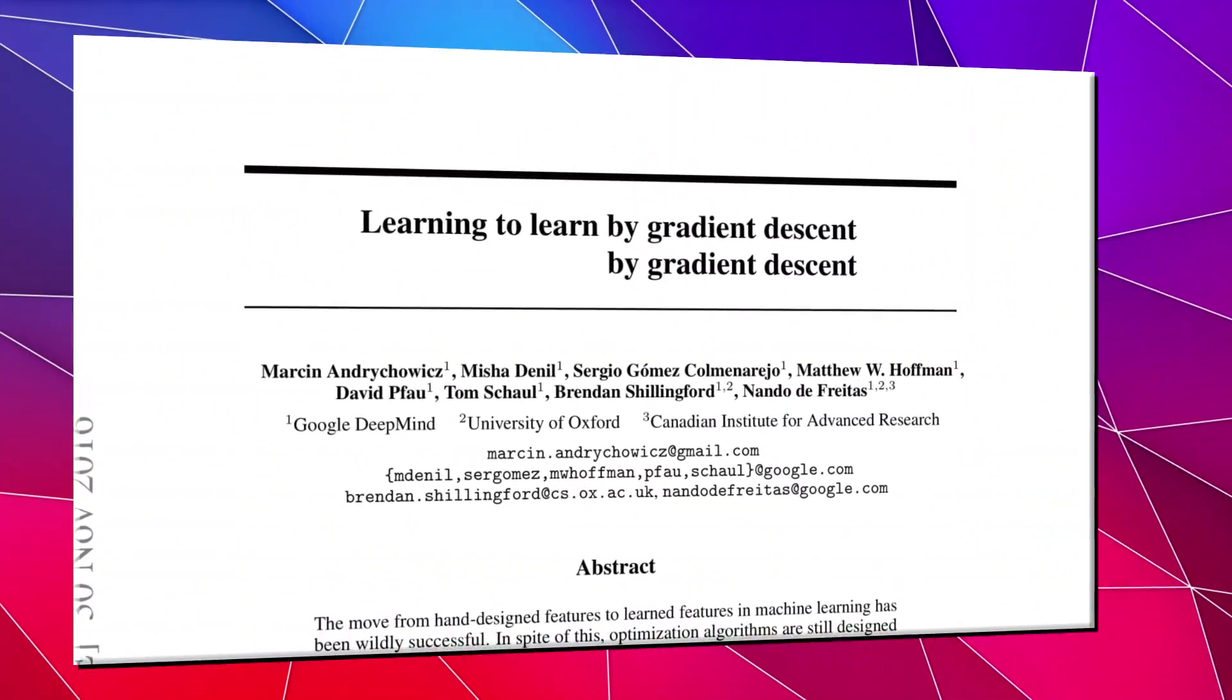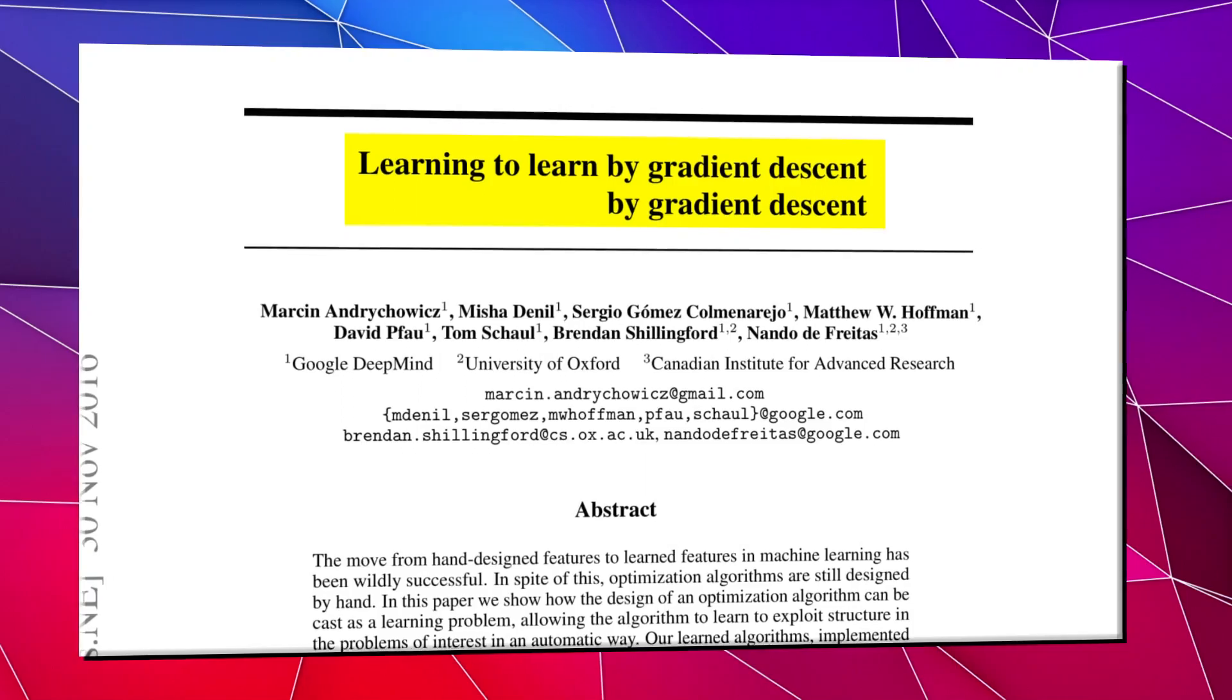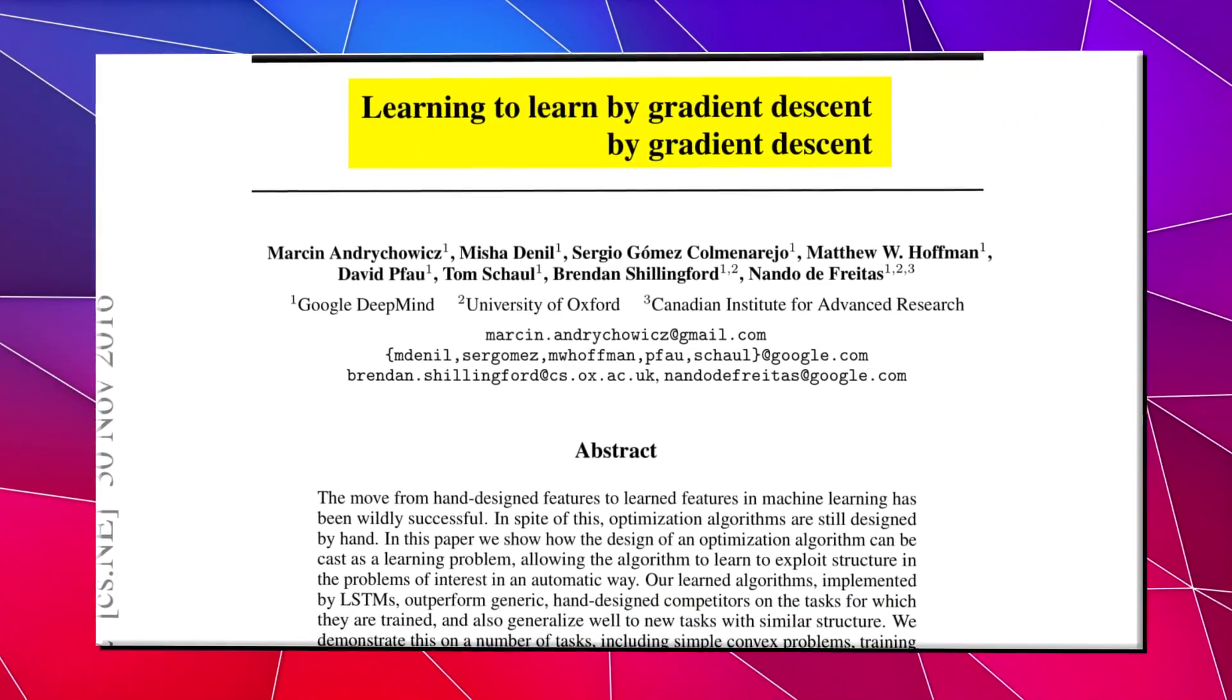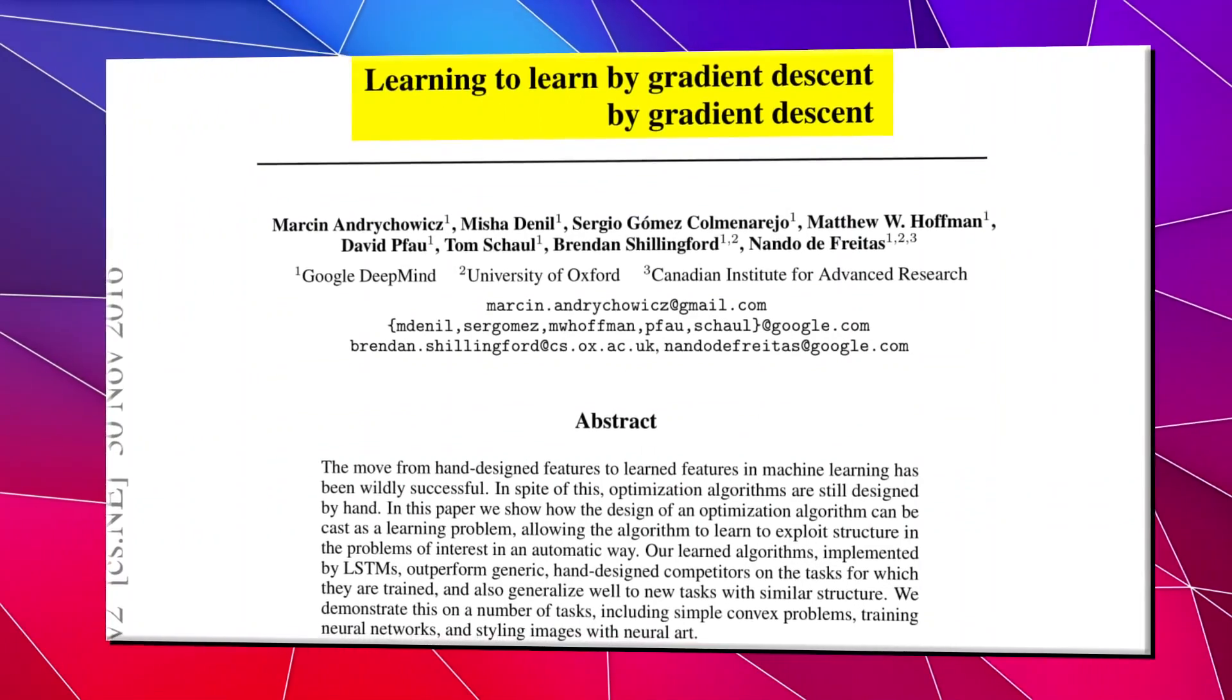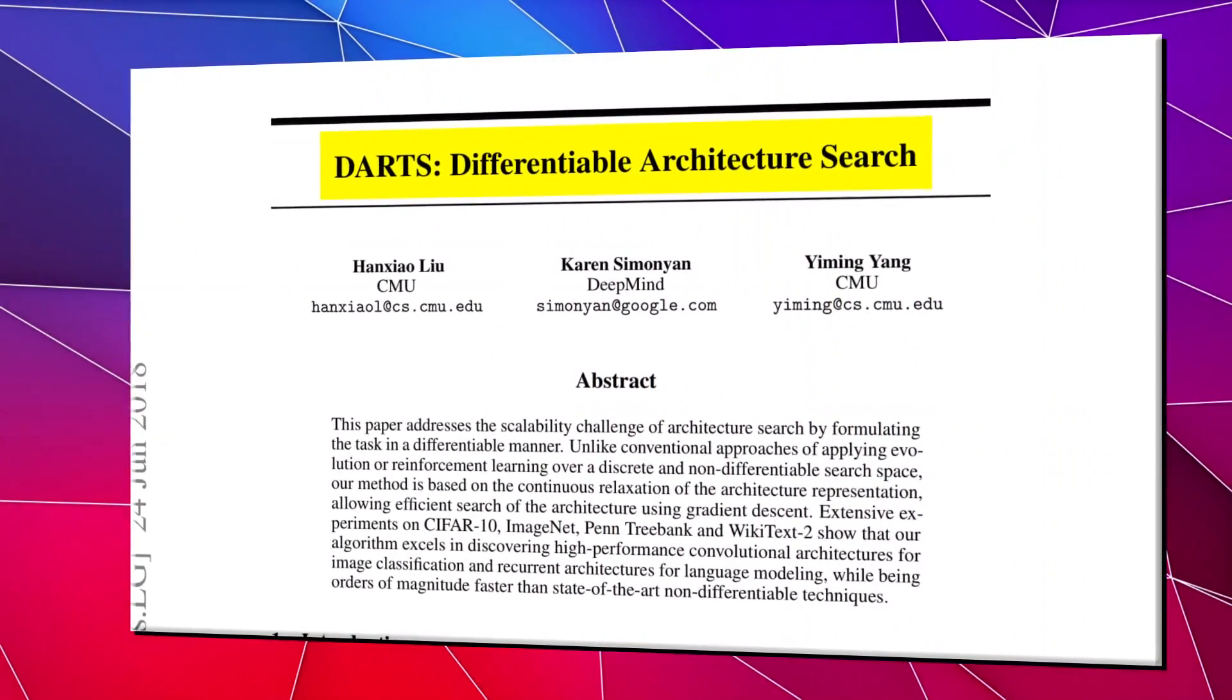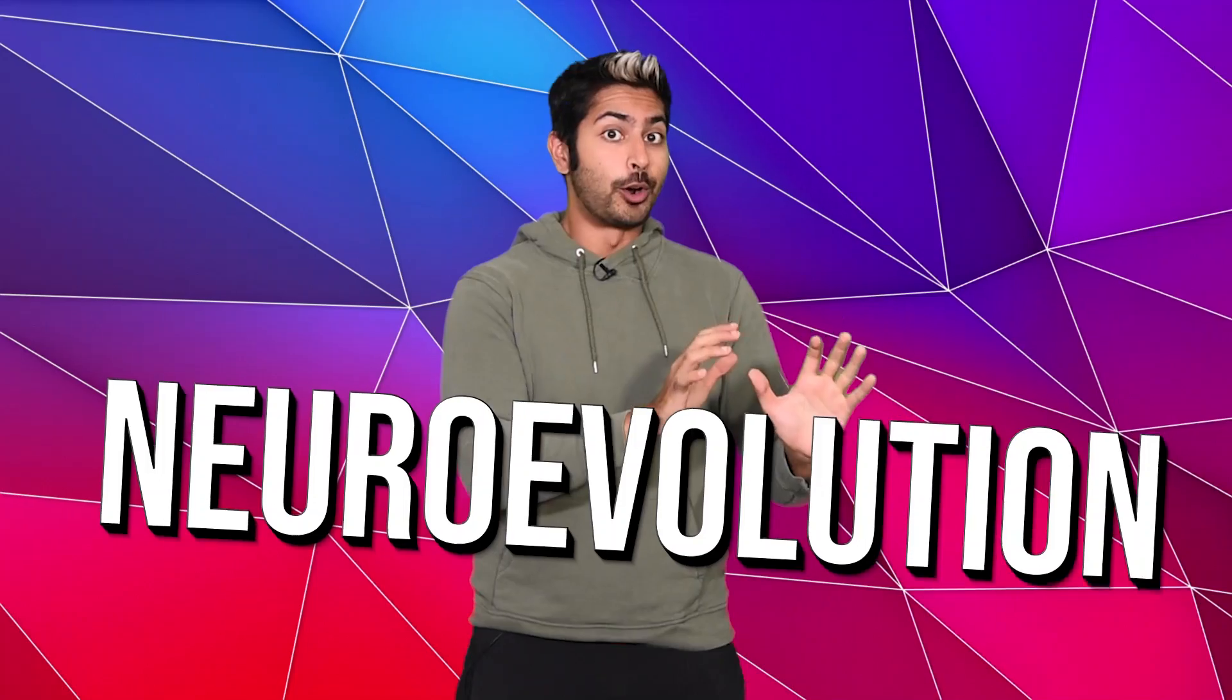If we look at the literature, there are some pretty hilariously named meta-learning papers that demonstrate these techniques, like learning to learn by gradient descent by gradient descent. And DARTs, or Differentiable Architecture Search Algorithm. But in this video, I want to focus on a specific meta-learning technique called neuroevolution.